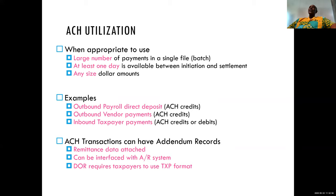The key difference between the two is that the ACH debit can be initiated both by the sender and the receiver, whereas the ACH credit is normally done by the sender. We use ACH transfers when we have a large number of payments to be made in a single batch. For instance, the Government of Ghana has about 600,000 employees, and at the end of every month the Controller and Accountant General's Department has to make payment to each and every one of them.